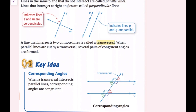A line that intersects two or more lines is called a transversal. When parallel lines are cut by a transversal, several pairs of congruent angles are formed. This line T right here is a transversal. For most of our purposes, the transversals we look at are going to be intersecting with a set of parallel lines, because that's going to create congruent angles.